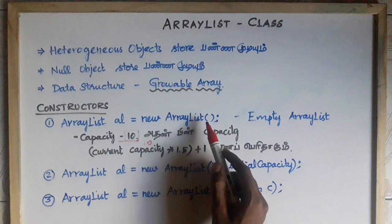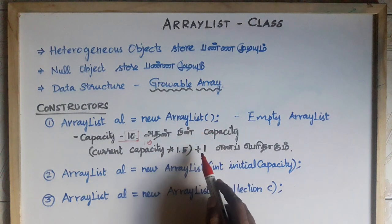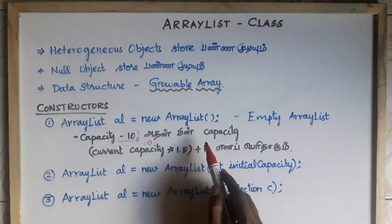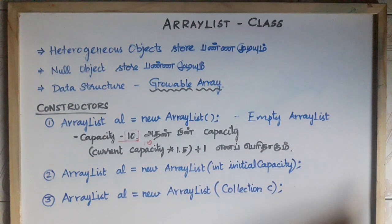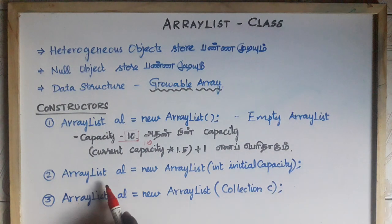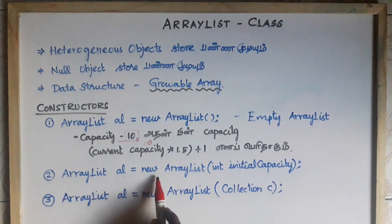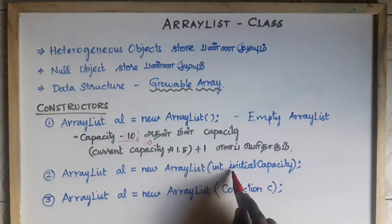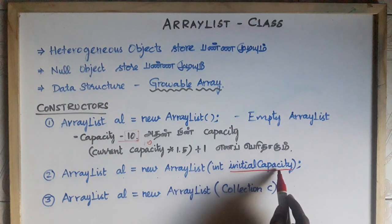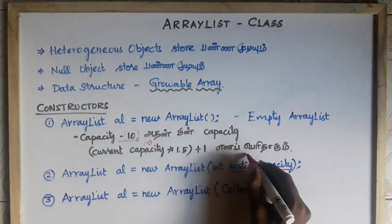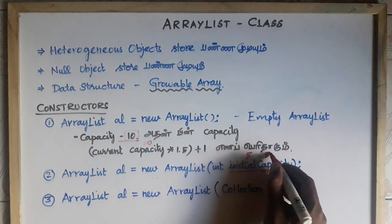For example, if you have a capacity of 10 and want to add only 5 elements, you can use the second constructor: ArrayList al = new ArrayList(initialCapacity). This allows you to specify an initial capacity for the user-defined number of elements.